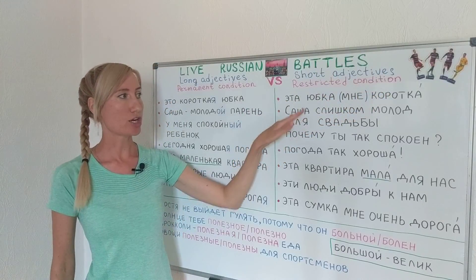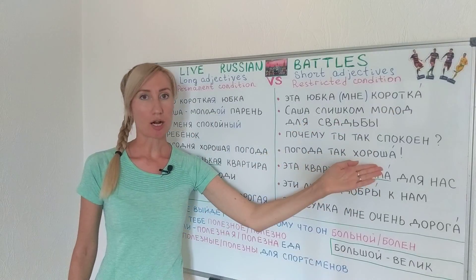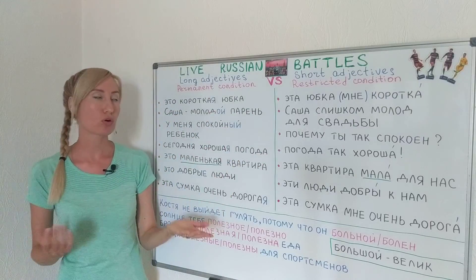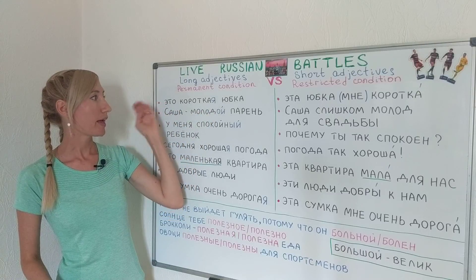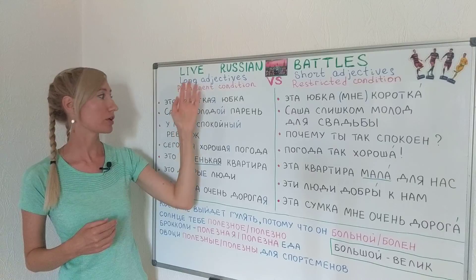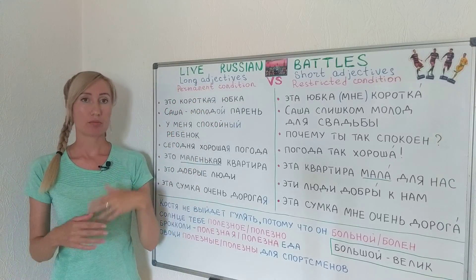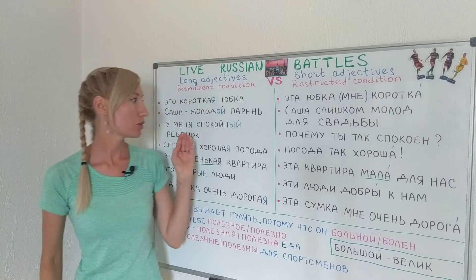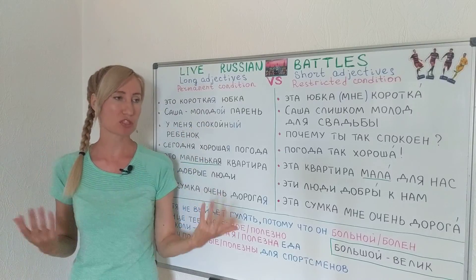I want to draw your attention to the fact that short adjectives always go after a noun — юбка коротка, Саша молод, погода хороша. But full adjectives can be placed before or after nouns. For example, это юбка короткая or это короткая юбка; у меня спокойный ребенок can also be мой ребенок спокойный. Adjectives can go before or after the noun.